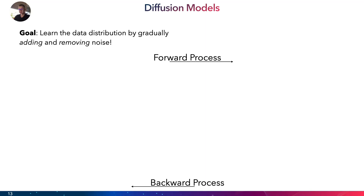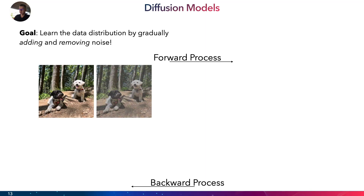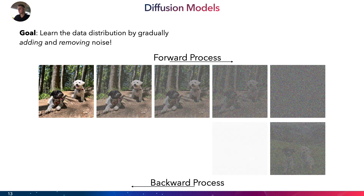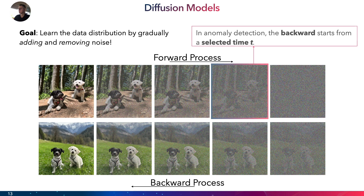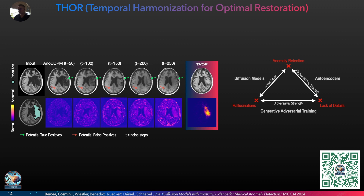Diffusion models learn the data distribution by gradually adding noise to a sample and then reverting or removing this noise to sample another image from the same distribution. However, as you can see, the input and reconstruction are slightly different. That's why in anomaly detection we don't start from pure random noise but from a selected time t. Depending on this t selection, diffusion models struggle either with removing the anomalies if t is too small, or with hallucinations if t is chosen to be too large.